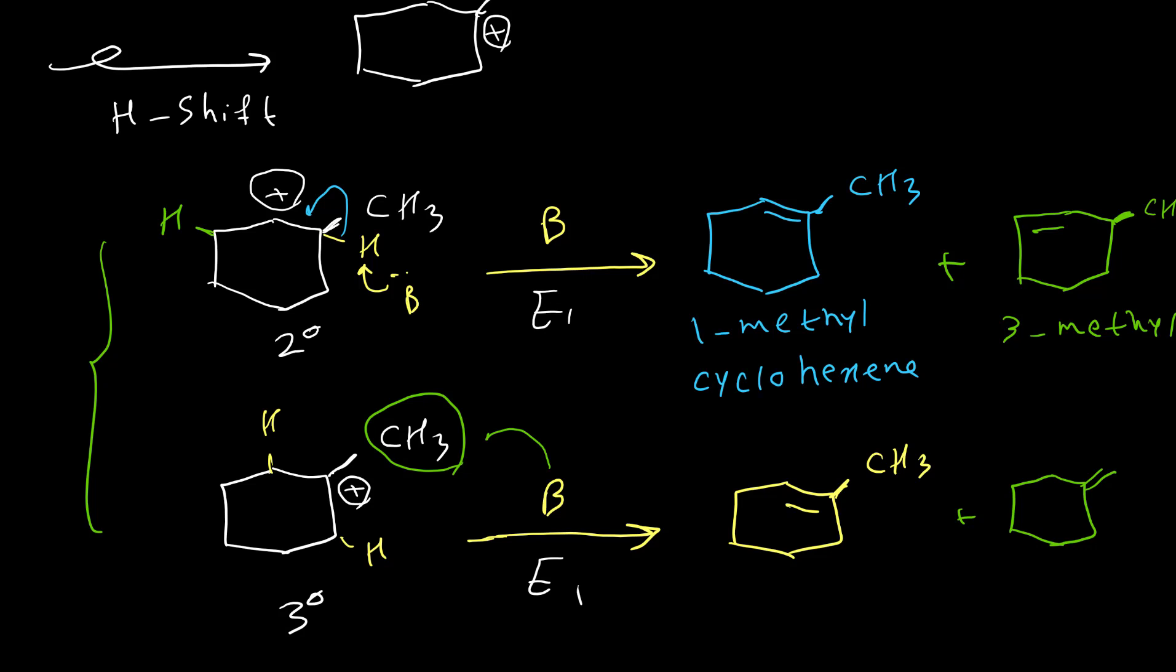Also, there is another rule, we call it Zaitsev. Zaitsev's rule says more substituted alkenes are our major product during the formation of alkenes. This alkene has three groups on the double bond, but this double bond has only two groups. So if that one has three substituents and this one has two substituents, this is our major product. Same for these two. From both of these carbocations, our major product is 1-methylcyclohexene.